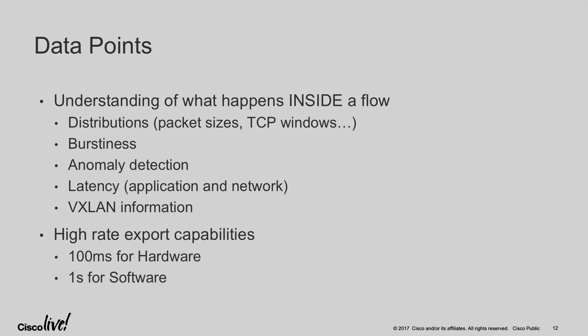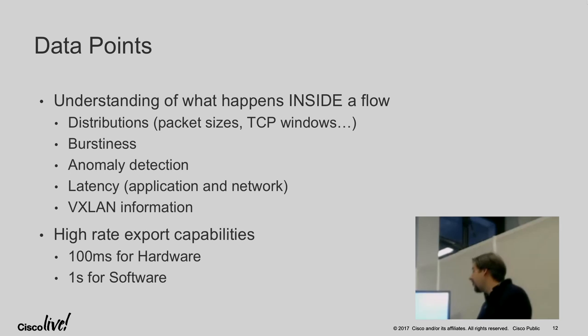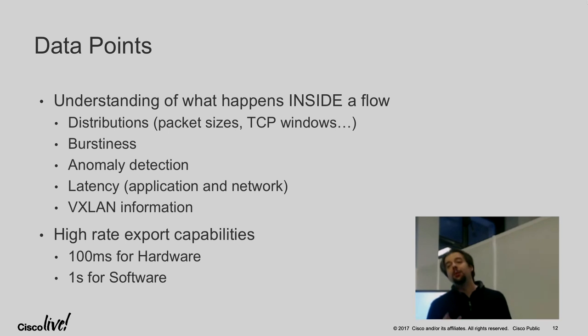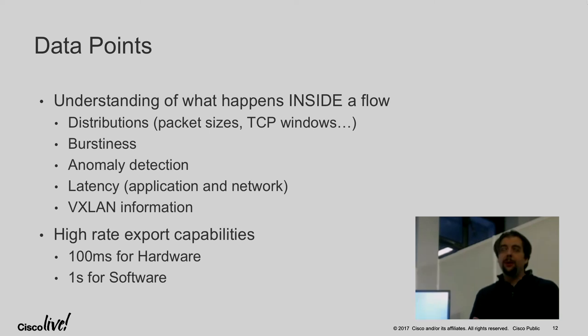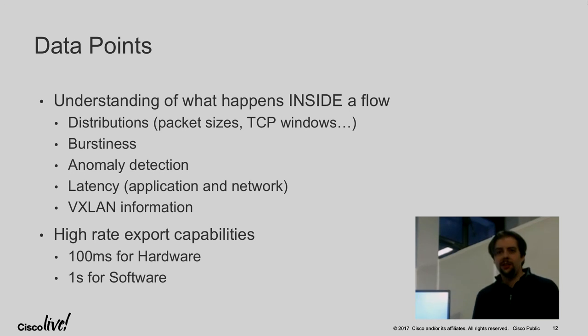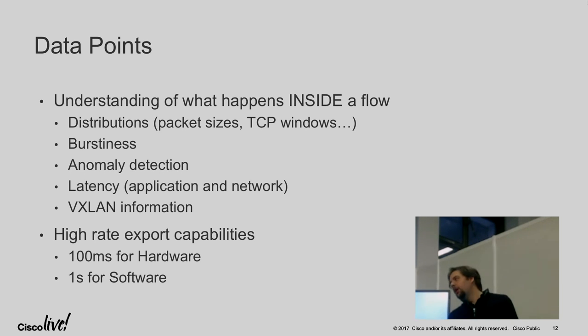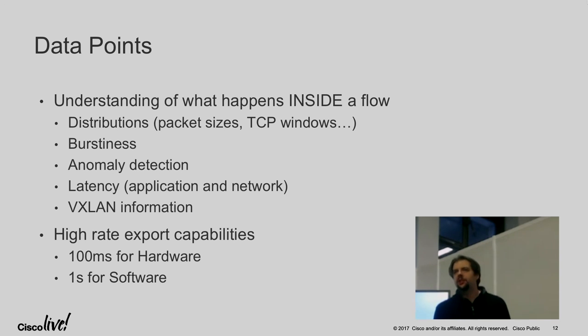In terms of export rate, it's pretty fast. The DSC could actually export far faster, but you couldn't build a platform that could take all those events together. So 100 milliseconds is good; today we use a one-second interval for the hardware since it's configurable and makes more sense. A software sensor is easier — we have a bit more memory so we can store more information before exporting.